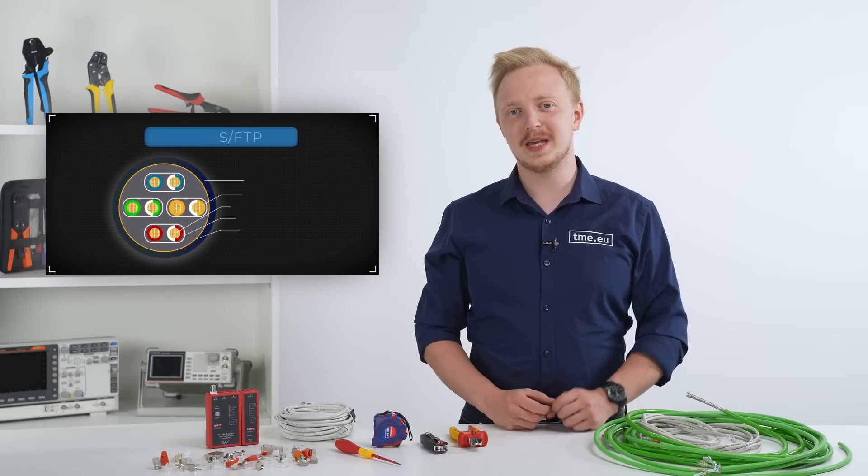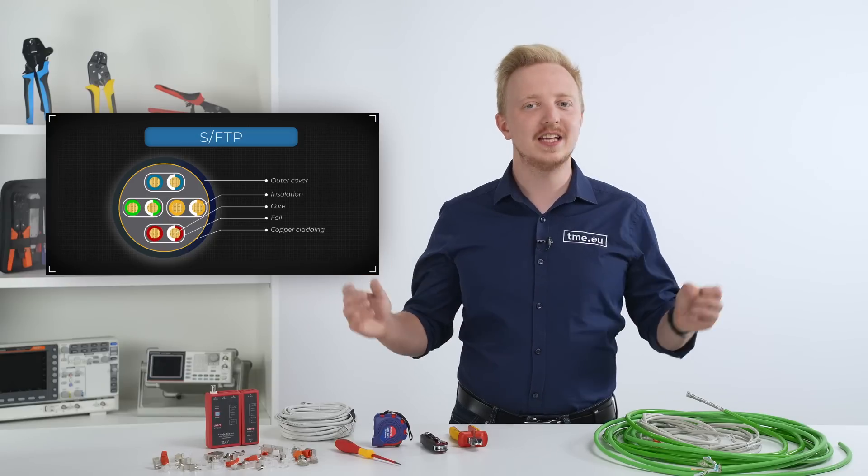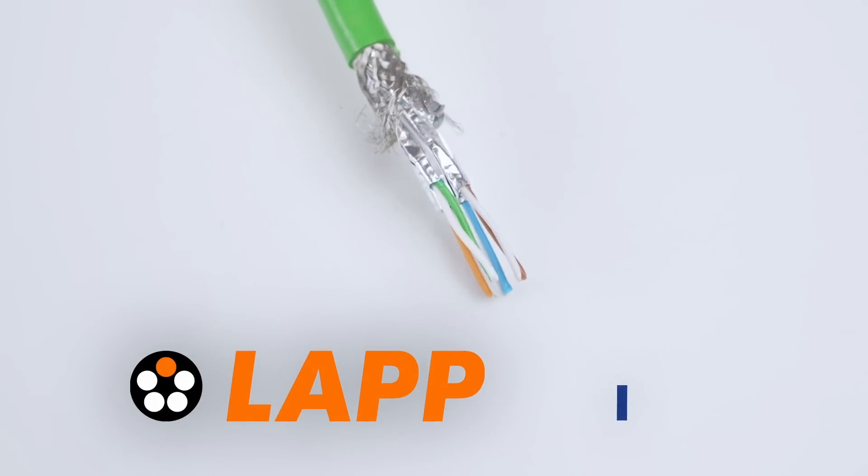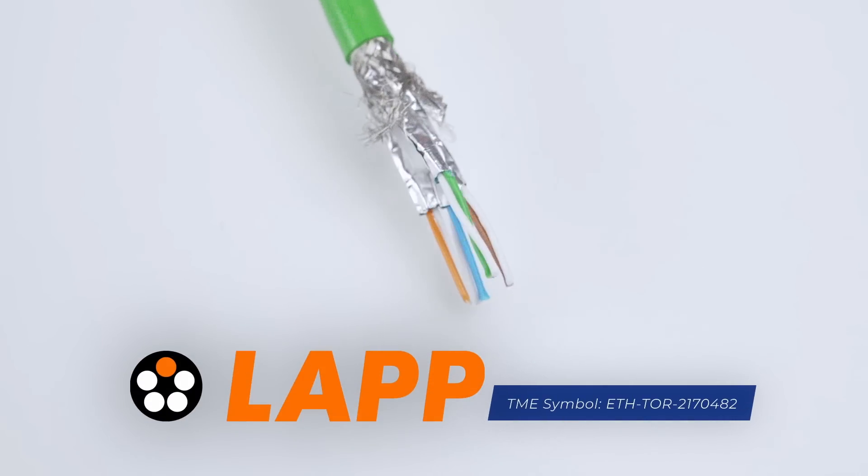The other extreme will be SFTP, which has braiding along the whole cable and shielding in foil form across the twisted pairs. And although it is better protected from interferences, it is bulky and hard to work with.